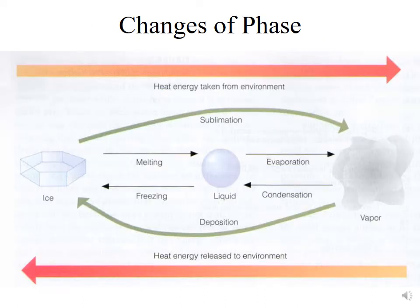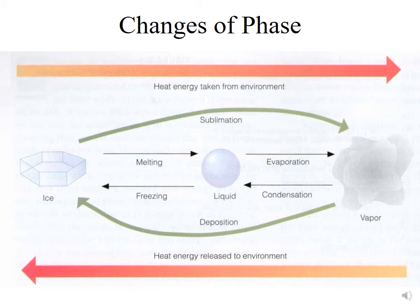The nomenclature we use for changes of phase: starting on the left we have our solid, which is ice; moving to the right we have our liquid, then our vapor. The transition between ice and liquid is known as melting. The transition between liquid and vapor is known as evaporation. The transition directly from ice to vapor without going through the liquid phase is known as sublimation. The most common example of sublimation is dry ice — carbon dioxide ice — which moves directly to vapor without leaving a puddle of liquid.